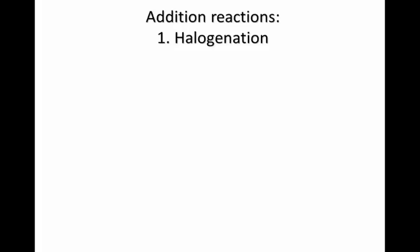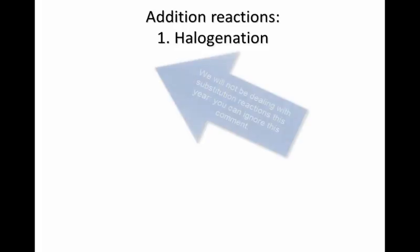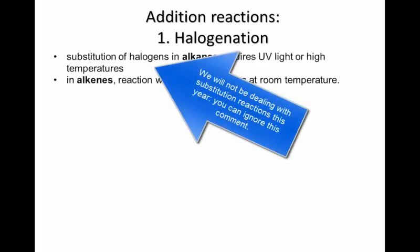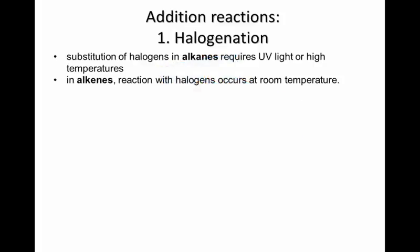Let's look at halogenation first. Recall that in alkanes, substitution with halogens required UV light, which is high energy light, or high temperatures in order to start the reaction. In contrast, alkenes are able to react with halogens at room temperature.